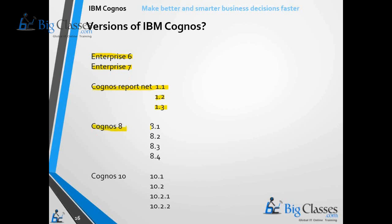Then there is the Cognos 8 series: 8.1, 8.2, 8.3, and 8.4. Of course all these versions have bug fixes — fix packs and service packs. Then there is Cognos 10, with versions 10.1, 10.2, 10.2.1, and 10.2.2. Version 10.2.2 is the latest release from IBM, released just a couple of months back.